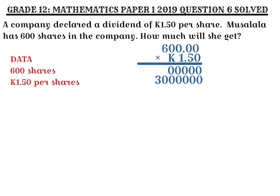Now we are going to multiply 600 by 1. Since we're multiplying by 1, we write two zeros in advance to hold the place values. Then: 1 by 0 gives us 0 for each column, and 1 by 6 gives us 6. We are now finished multiplying 600 by 1.5.